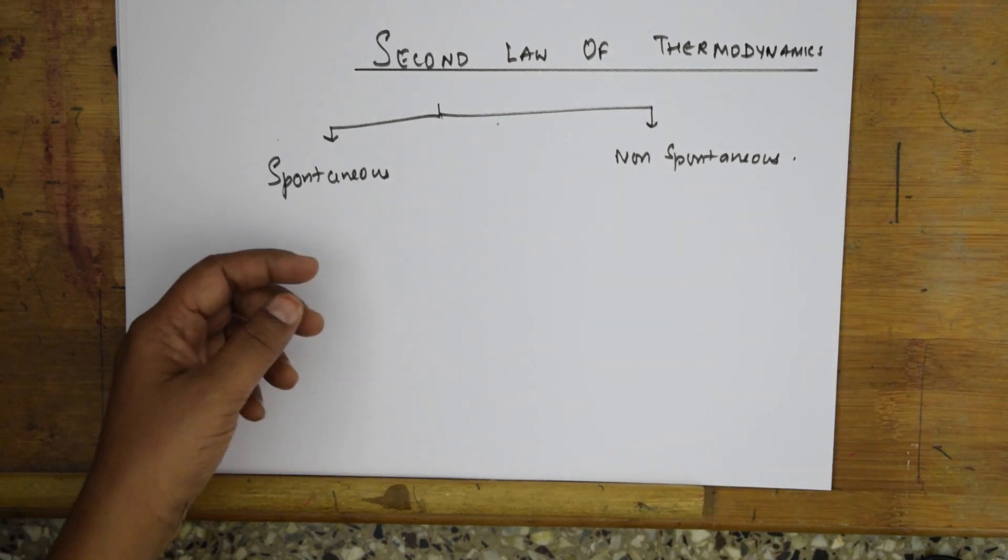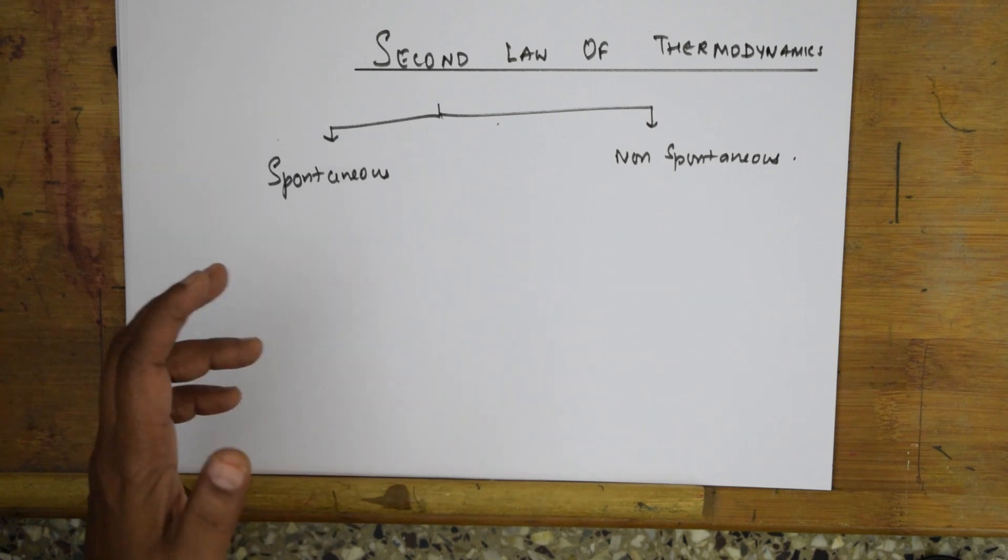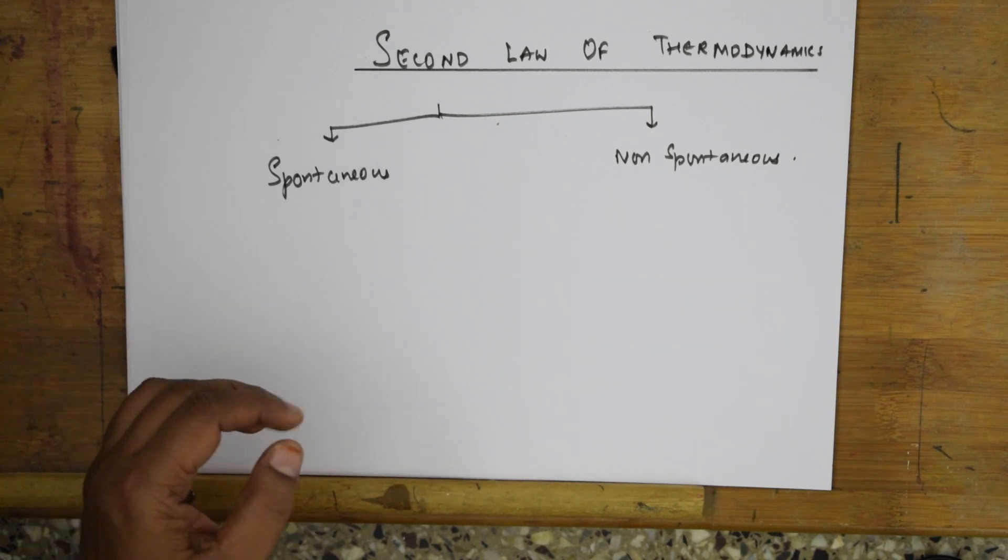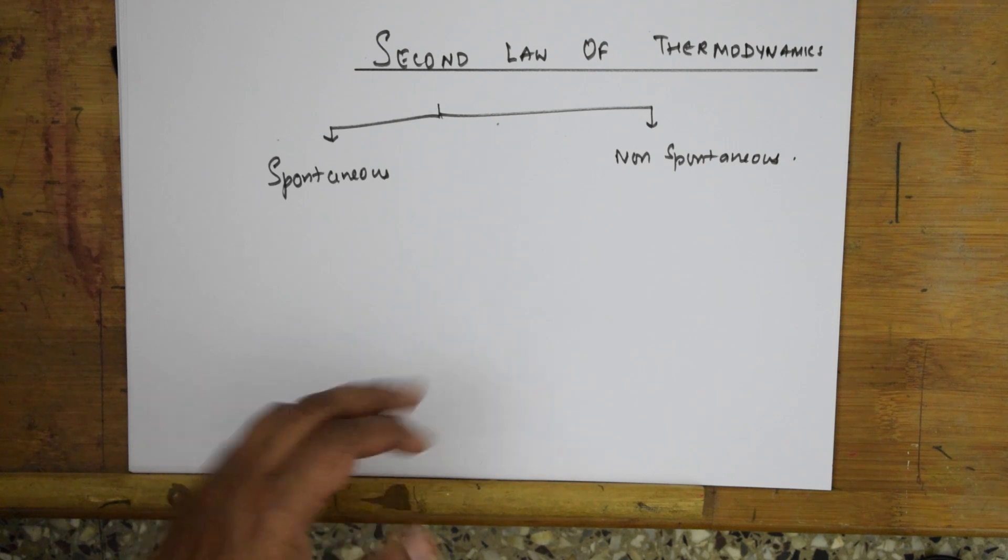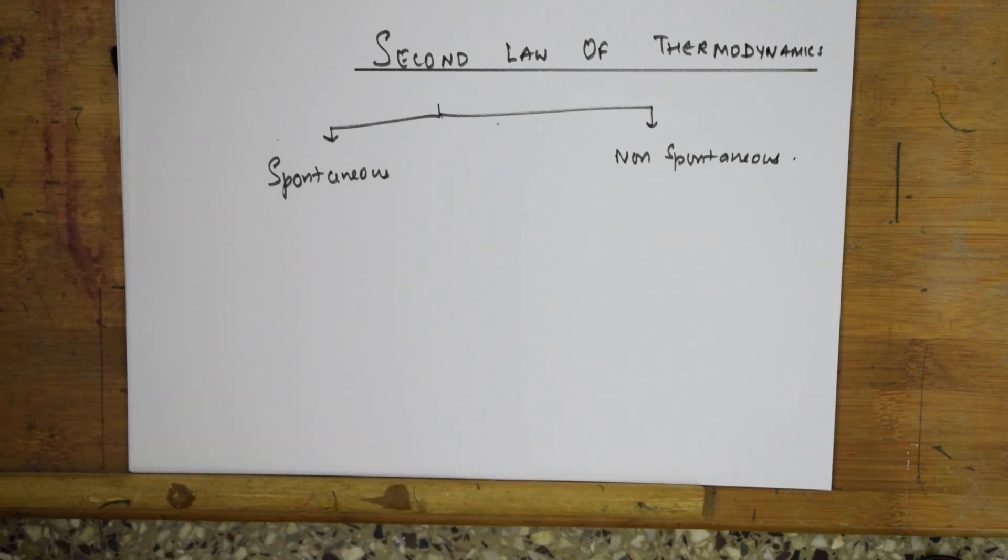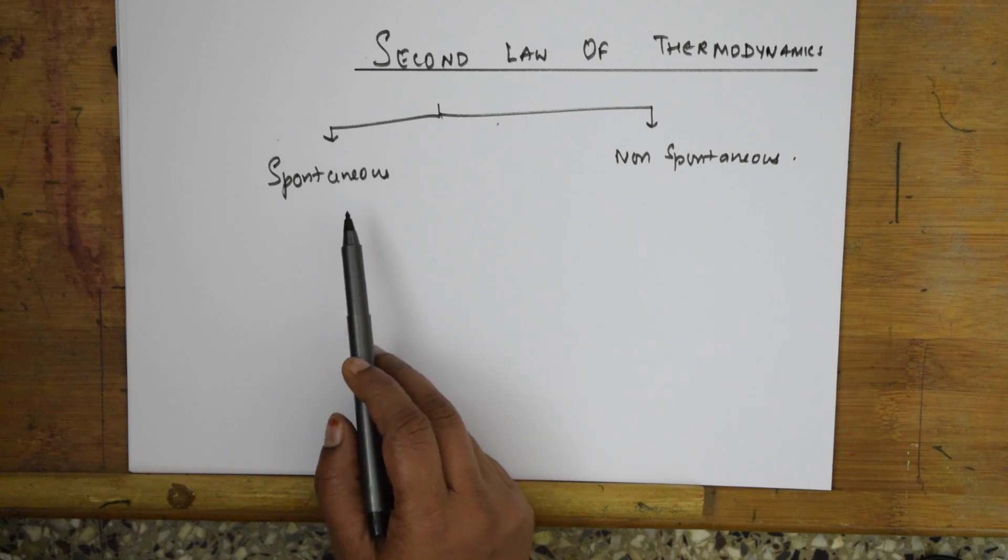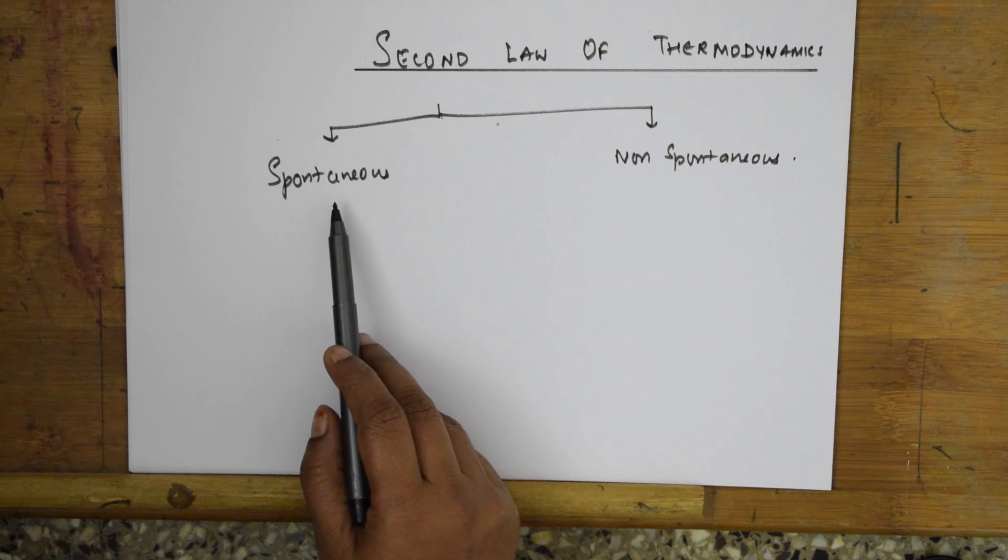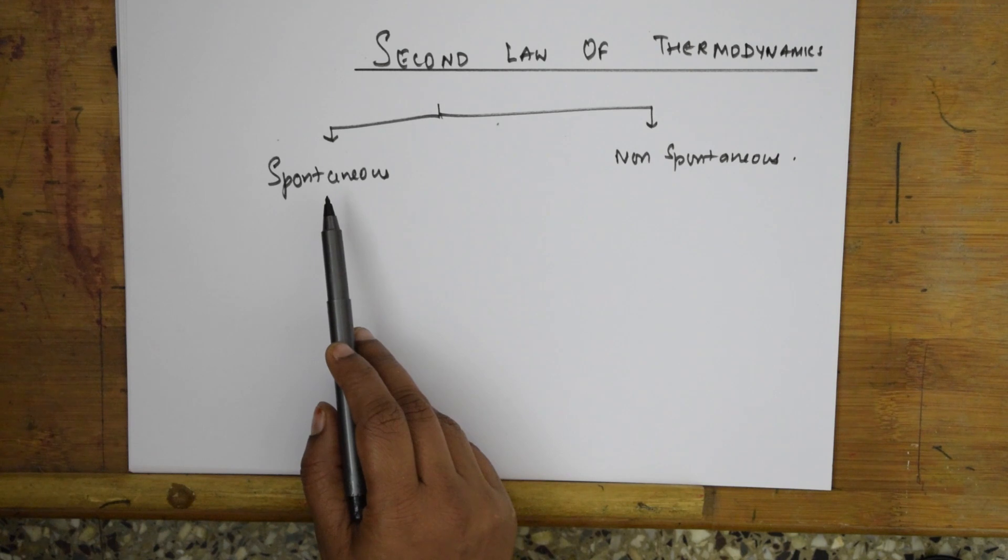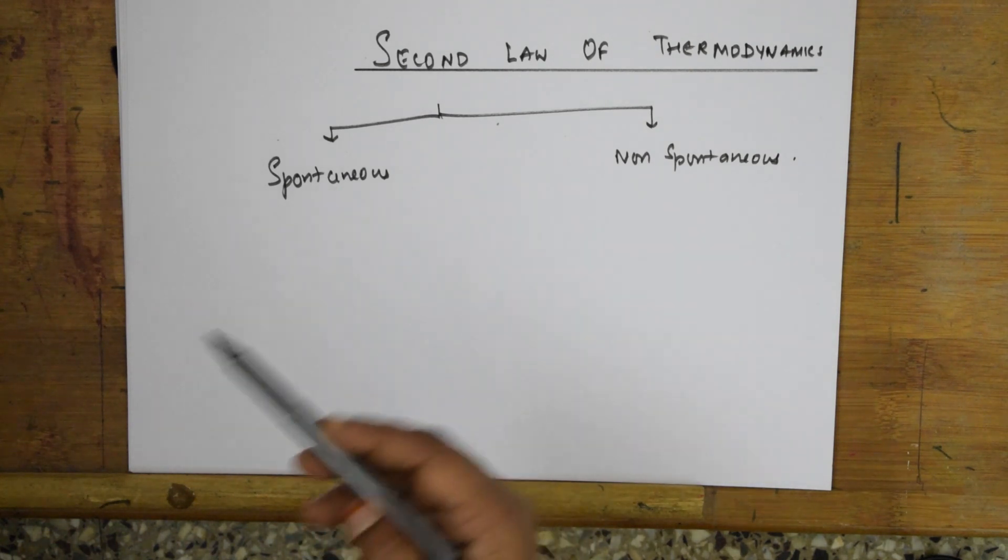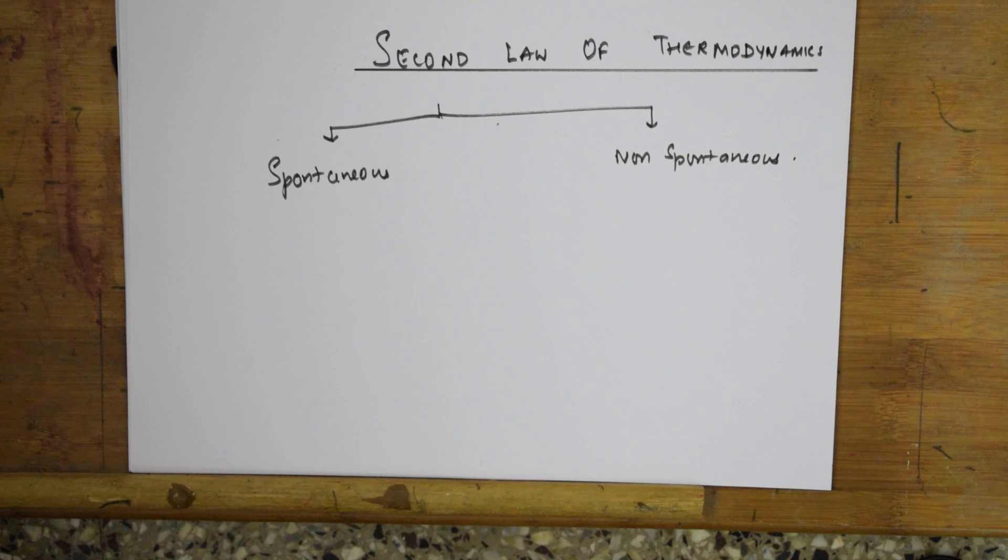Once somebody hits you, what do you do? Spontaneously you respond. Immediately you will respond. Non-spontaneous means it will not proceed further by itself. A process which occurs according to its accord, means its own pace. Let us write the definition.